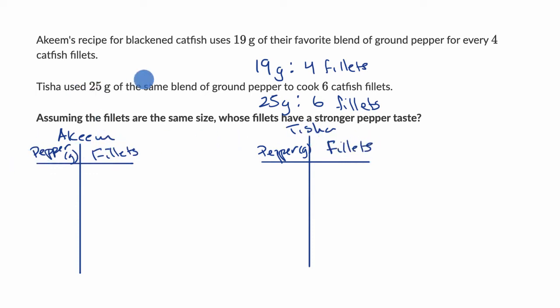So we already know that if Akeem were to make exactly four fillets, then they're going to use 19 grams. Let's keep going from there. If we double the amount of fillets, we're gonna double the amount of grams. We're going to get to 38 grams.